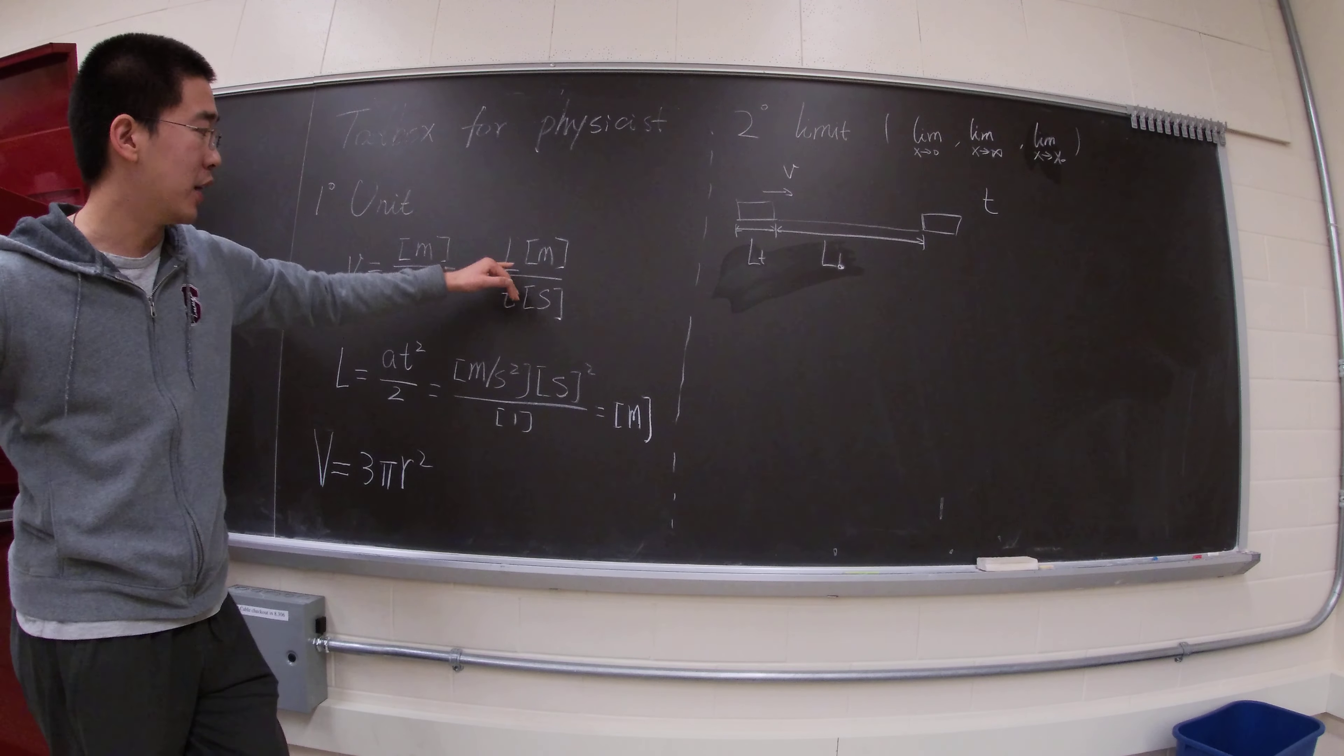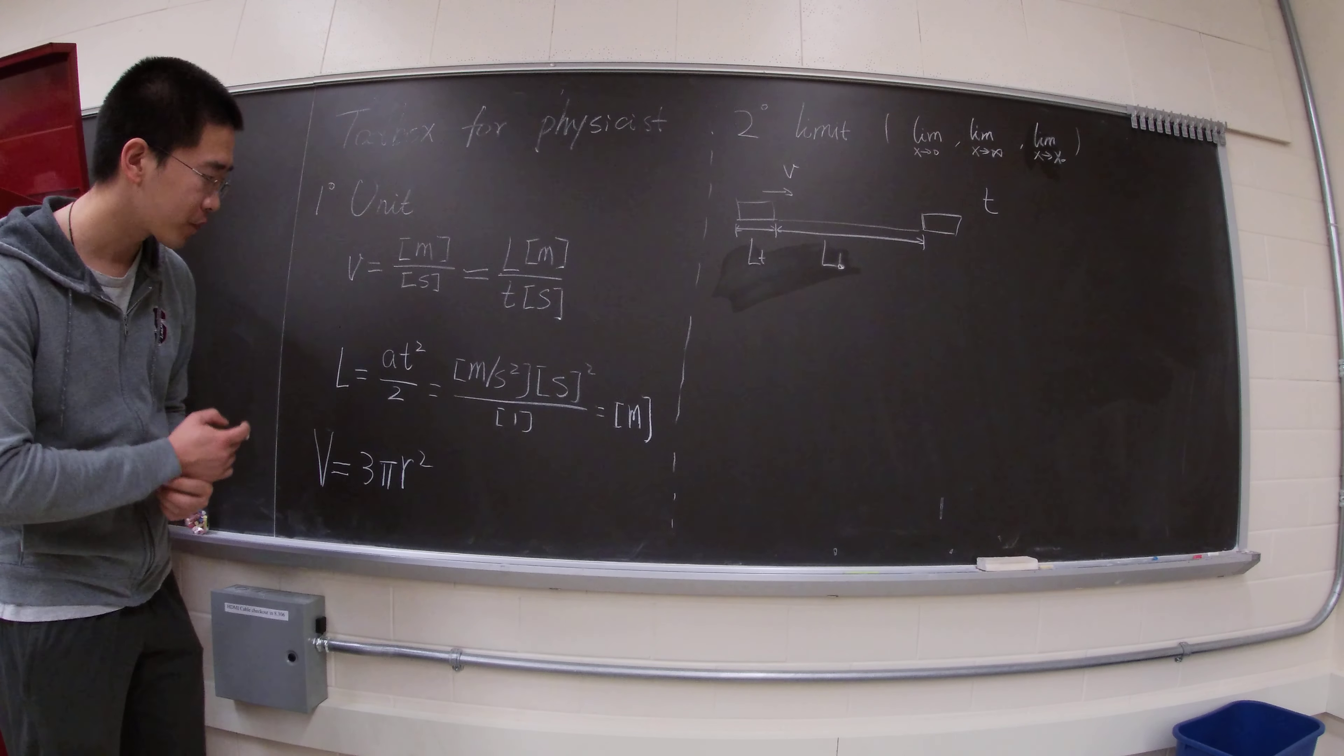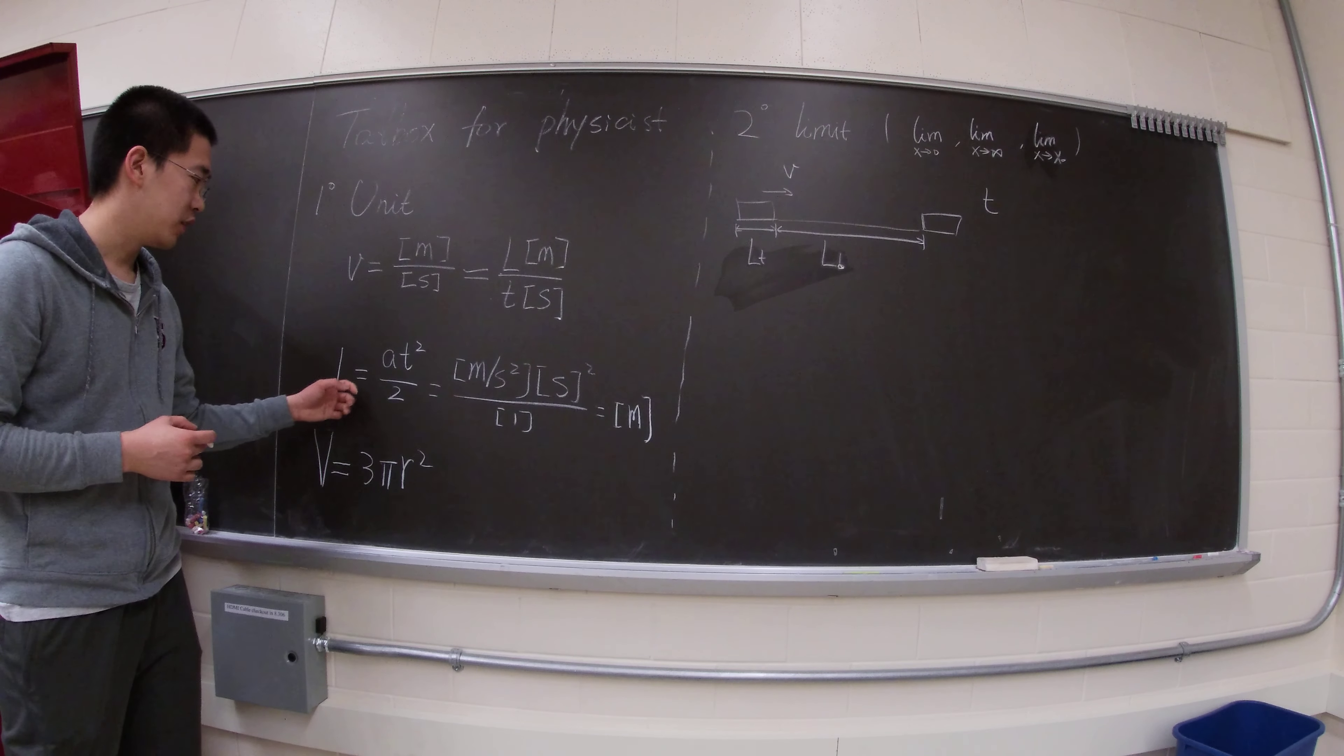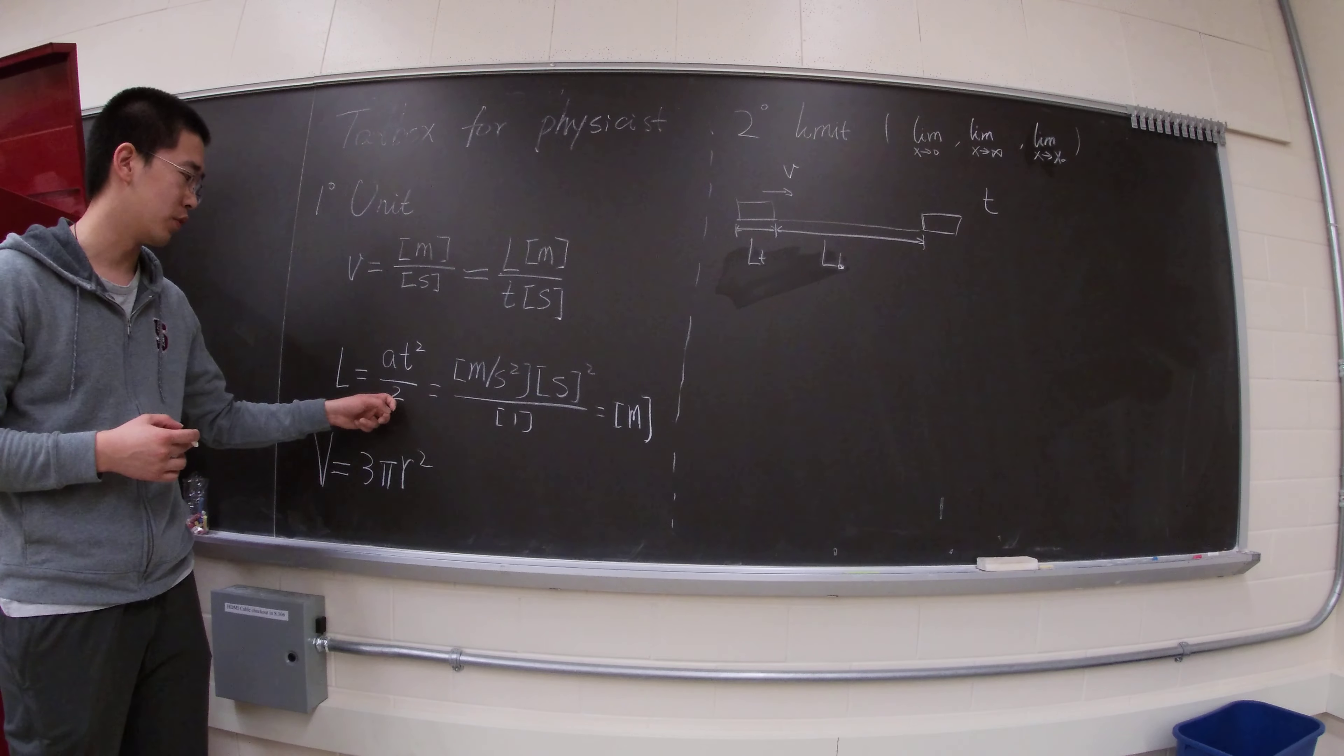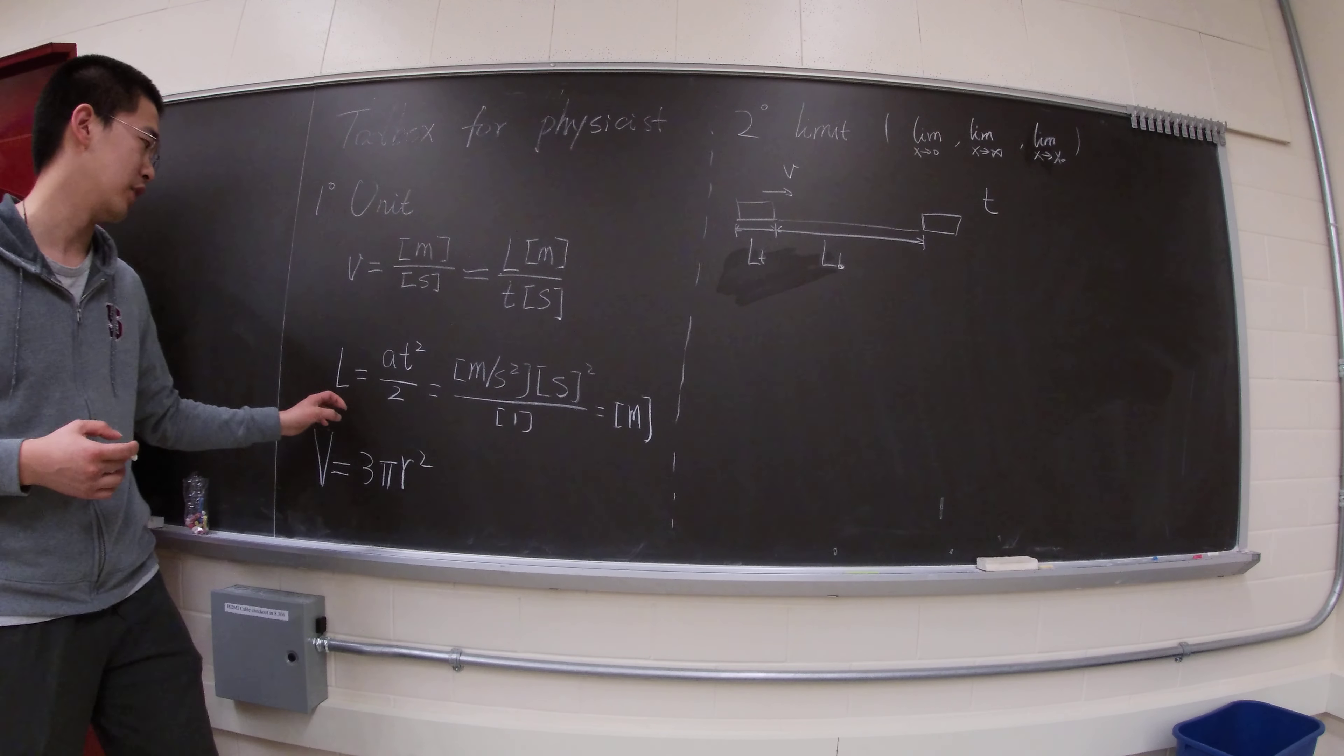And so it matches with the expression, it's a really rudimentary expression of L over T. So say if you don't know the acceleration formula, then the length equals to acceleration dotted by time square over two, you could essentially figure out the unit of the acceleration by doing such things.